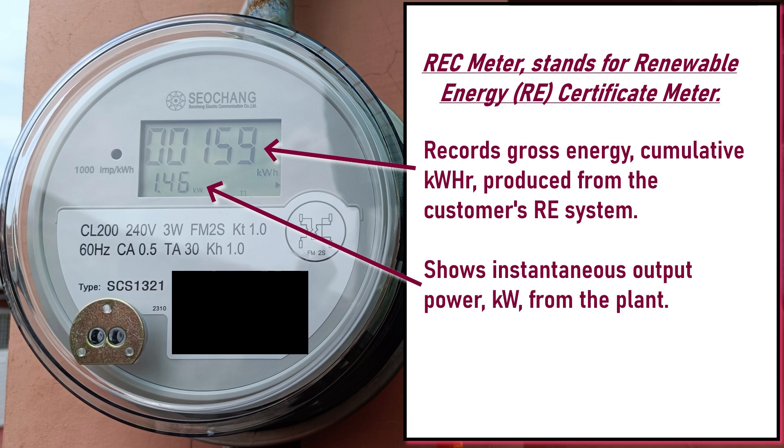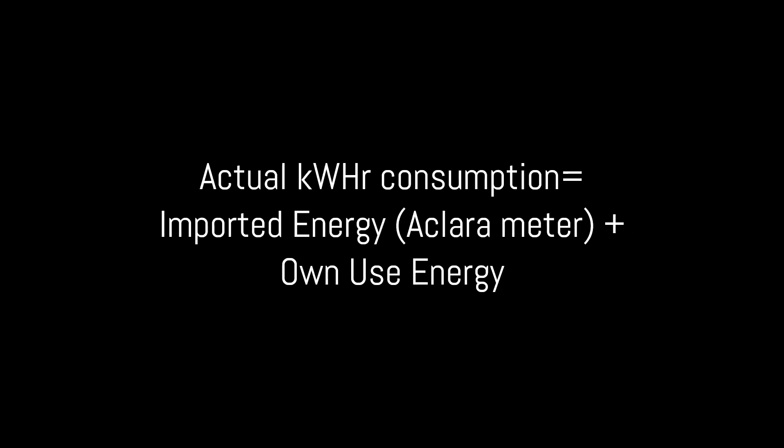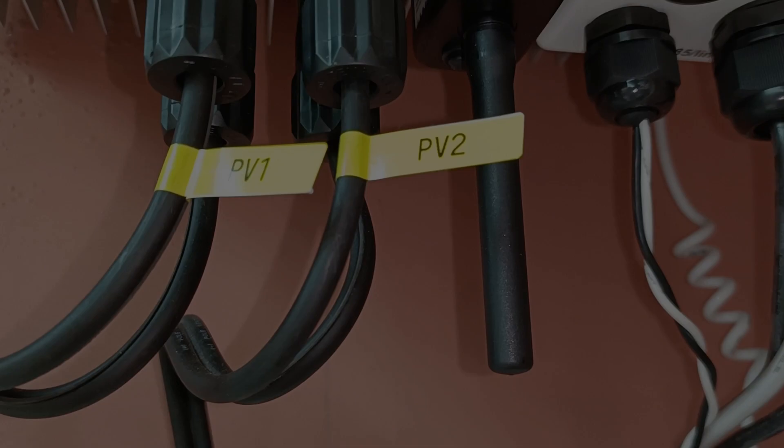The REC meter here also shows the real-time kWh power output of the solar power plant. The relationship between the bi-directional meter and the REC meter is this: both meters are used to compute for the actual kWh consumption in the electric bill. Actual kWh consumption is imported energy plus on-use energy. On-use energy is the energy registered by the REC meter minus the exported energy, so you need the readings of both meters in the utility electric bill.